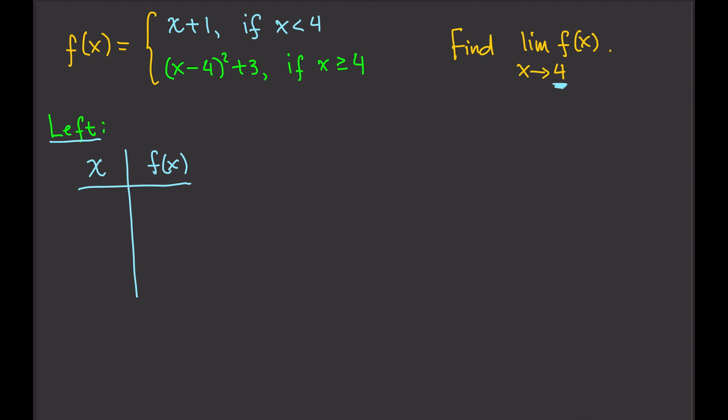Again, it's up to you what numbers you will use as long as they will approach 4 from the left, then we will evaluate the function at these values. Remember, again, these values are less than 4 because we're looking at the left of 4. And all of these values belong to this domain. And so when we evaluate, we are going to use this right here, not this. We're going to use this.